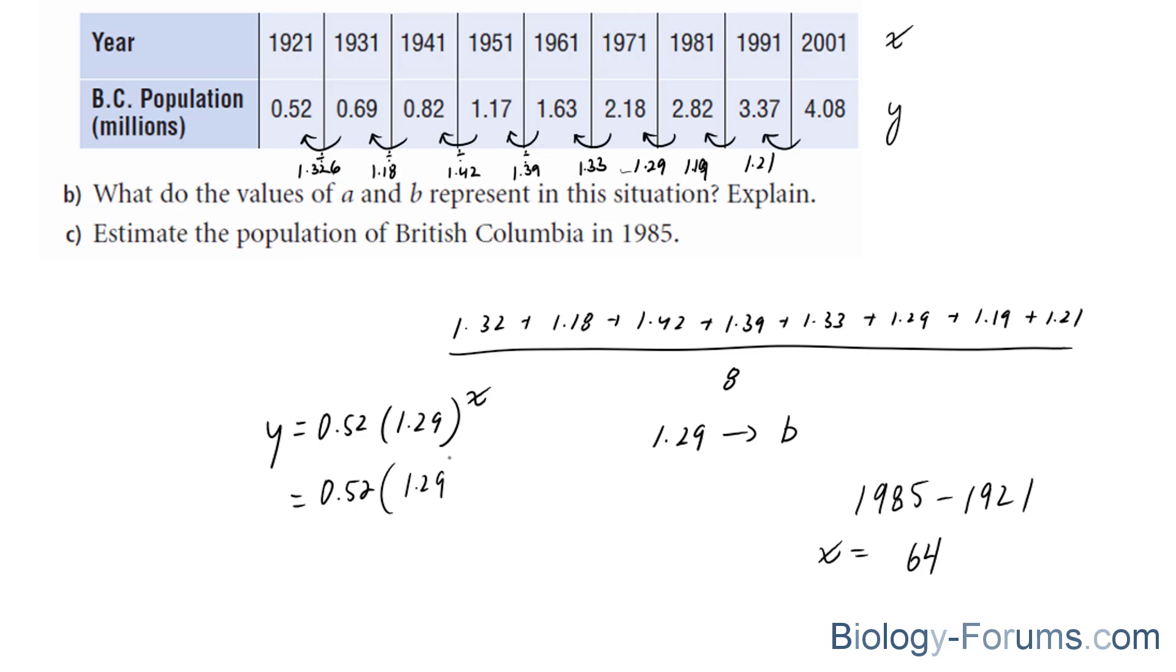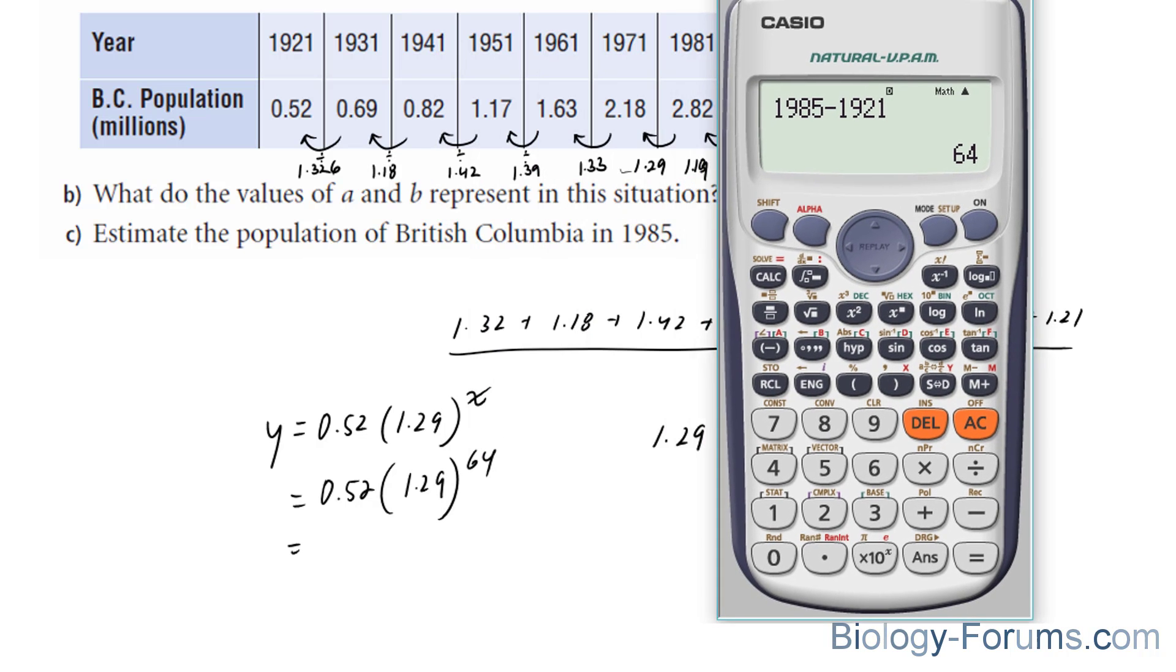1.29 to the power of 64 should give us a semi-accurate population.